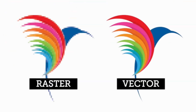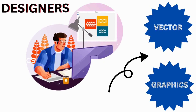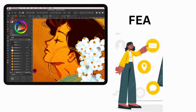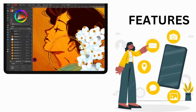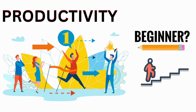It has both vector and raster workspaces, allowing designers to switch between them. Affinity Designer provides many features such as unlimited artboards, advanced color controls through RGB and Lab color spaces up to 32 bits per channel. You can get a wide range of tool sets which allow you to achieve high-level accuracy and productivity.